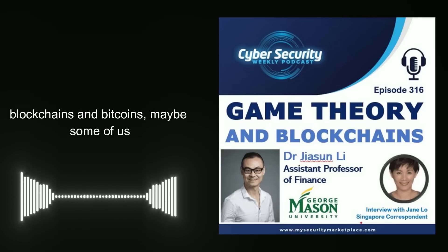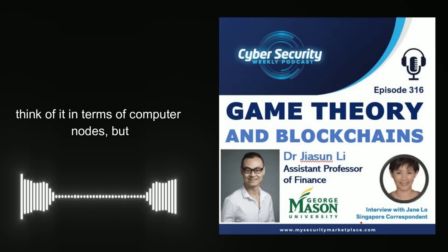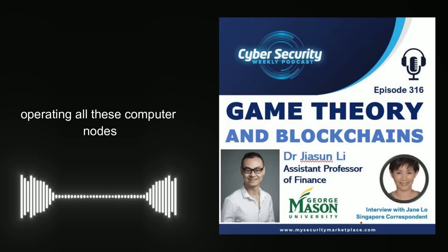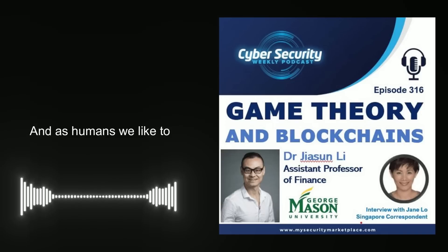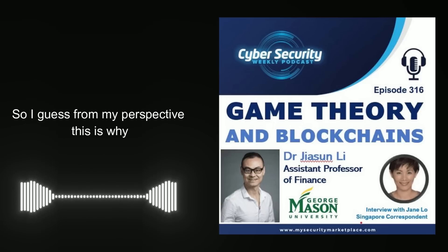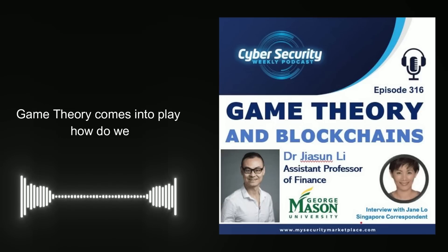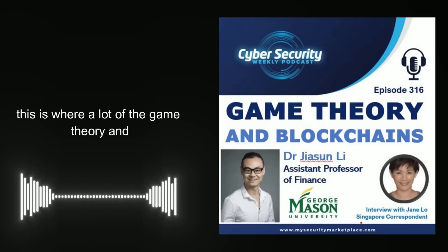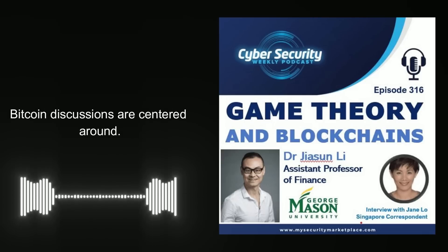When we think about blockchains and bitcoins, maybe some of us think of it in terms of computer nodes, but at the end of the day there are humans behind operating all these computer nodes. When there are humans, we like to optimize our outcomes, and when there are incentives, we like to optimize our incentives. From my perspective, this is where game theory comes into play — how do we strategize to optimize our incentives, and this is where a lot of the game theory and Bitcoin discussions are centered around.